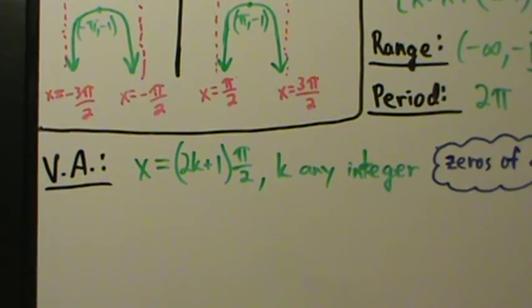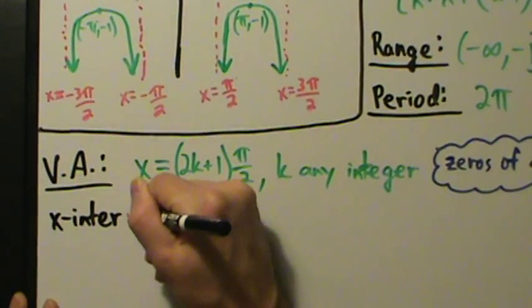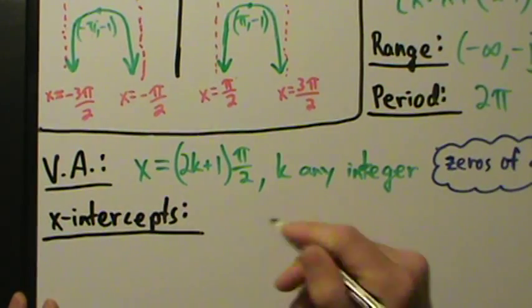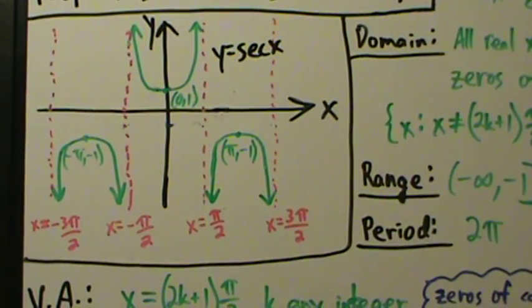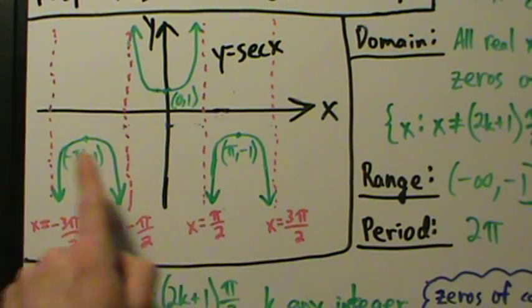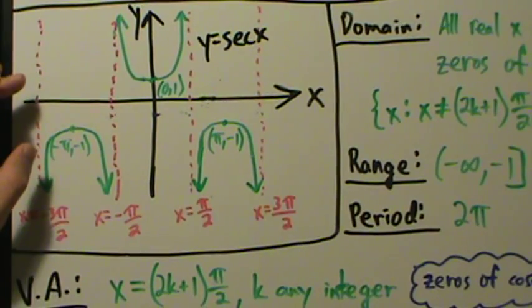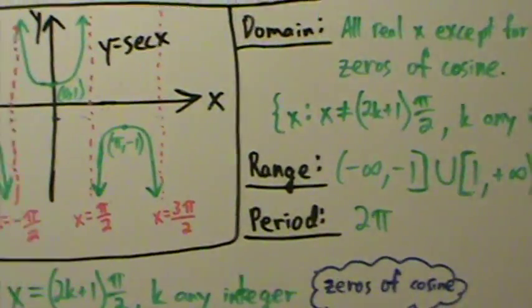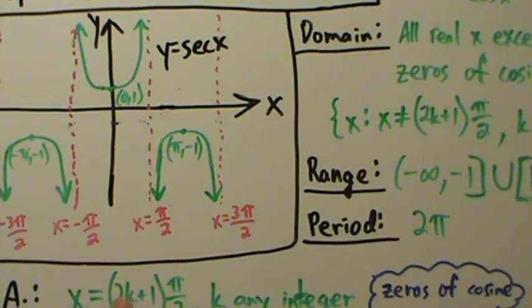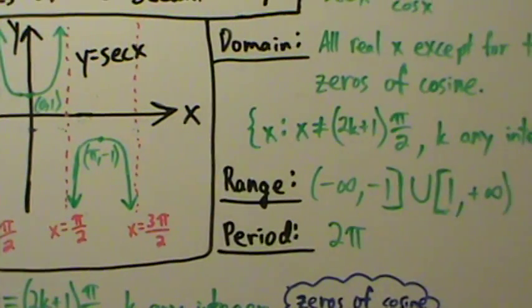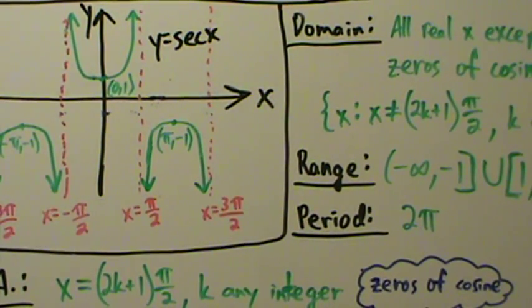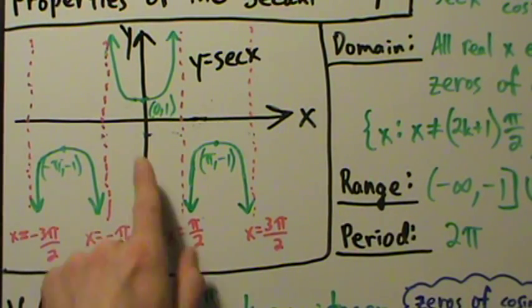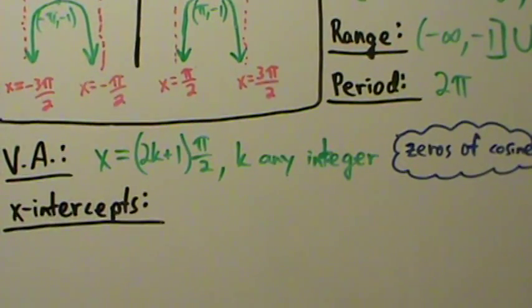X-intercepts: this is actually pretty simple. An x-intercept is a point where you're on the x-axis, where y = 0. Looking at the graph, we never touch the x-axis. We can also tell this from the range — zero is not part of the range of secant, so there is no value of x such that secant of x equals zero. Therefore, there are no x-intercepts.